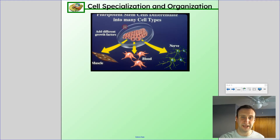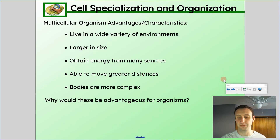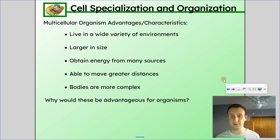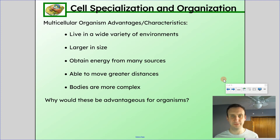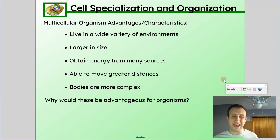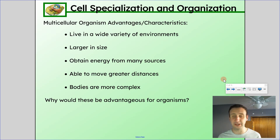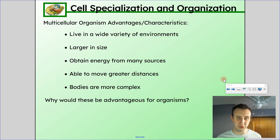Here's a diagram showing that stem cells can differentiate into blood cells, muscle cells, nerve cells, and so on. Stem cell research is obviously a big strand of research — looking at how we can turn cells into stem cells and how we can use stem cells to replace cells that are damaged or need to be replaced. So why do multicellular organisms have multiple types of differentiated cells? Multicellular organisms have advantages over single-celled organisms — for example, they can live in a wide variety of environments.